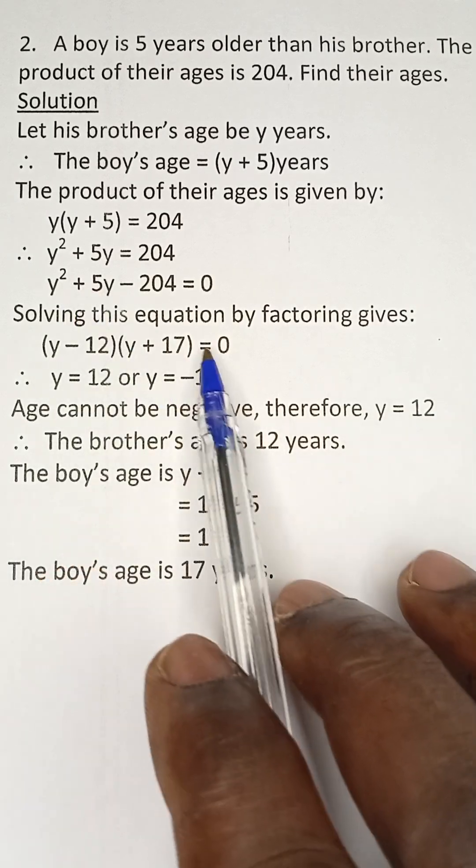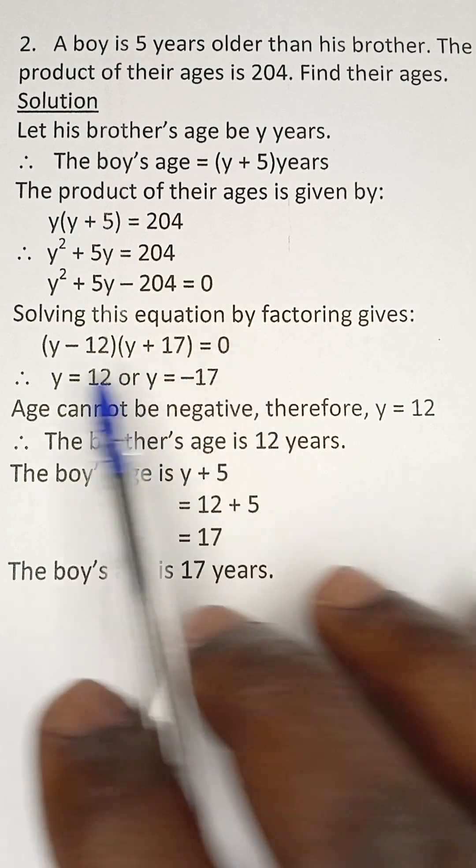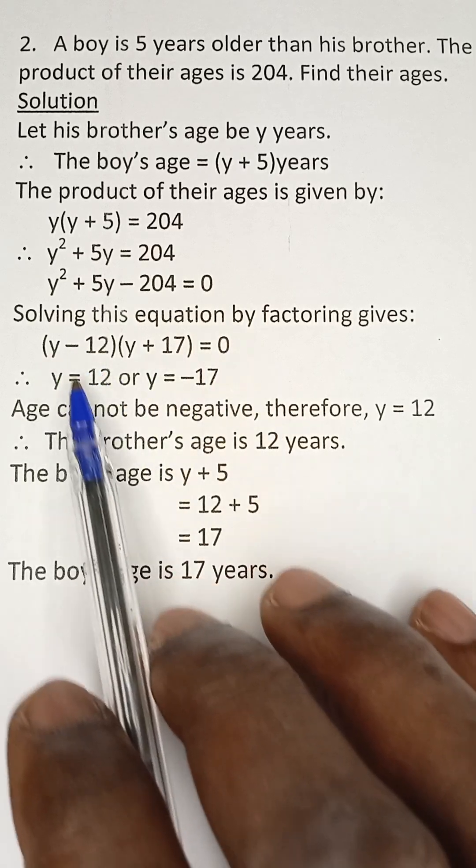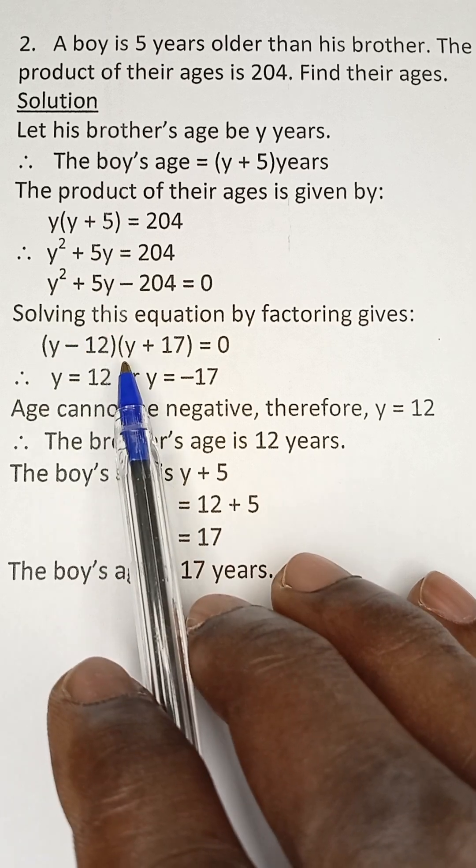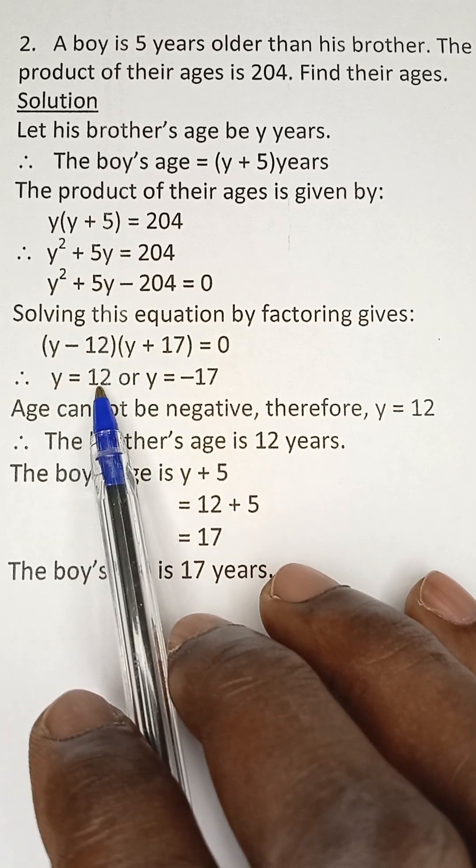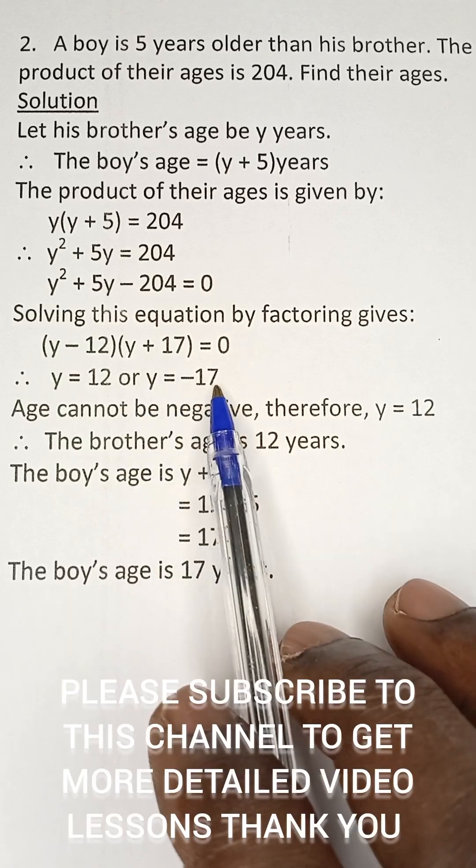Then equate to zero. Now equate each of these brackets to zero. When we equate this to zero, we have y is equal to 12, because this positive 12 will go to the other side of the zero. So y equals 12, and then y equals negative 17 when it goes to that side.